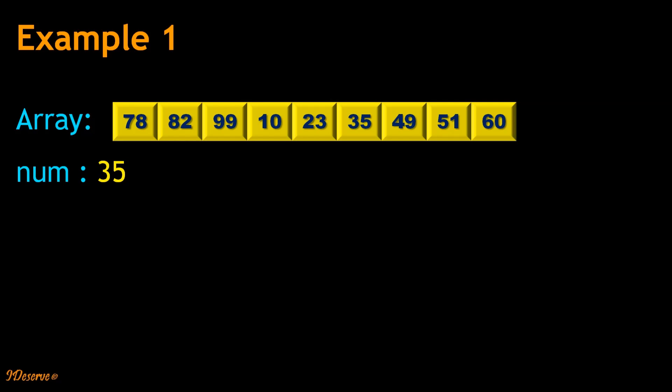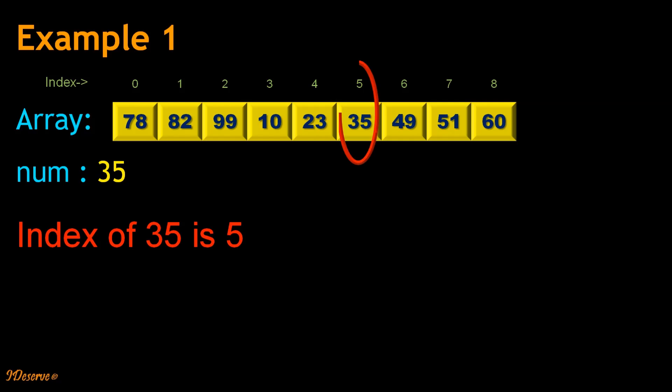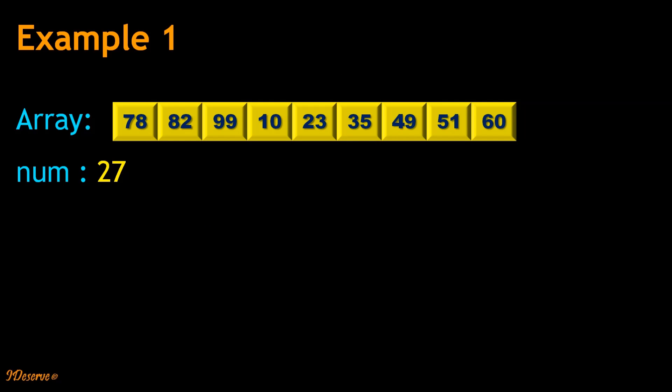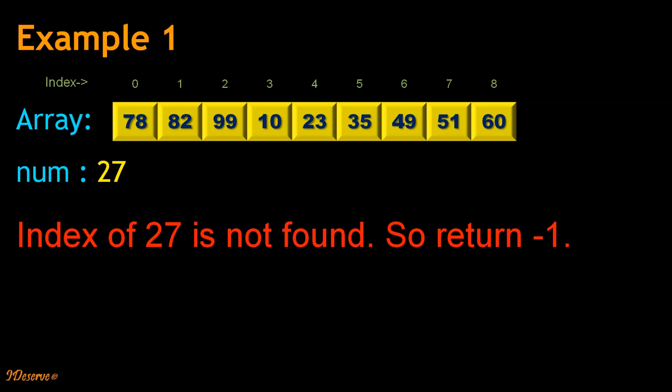Let us take one example to understand this. Consider the following sorted rotated array. We have to find number 35 in it. The index of 35 is 5, so we return 5 as the answer. Consider another number 27. Since 27 is not found, we return –1 as the answer.